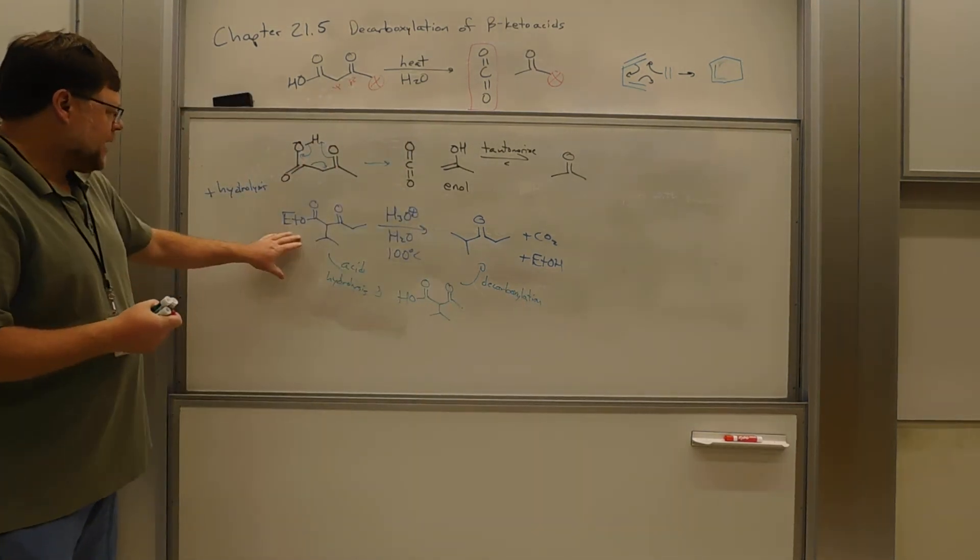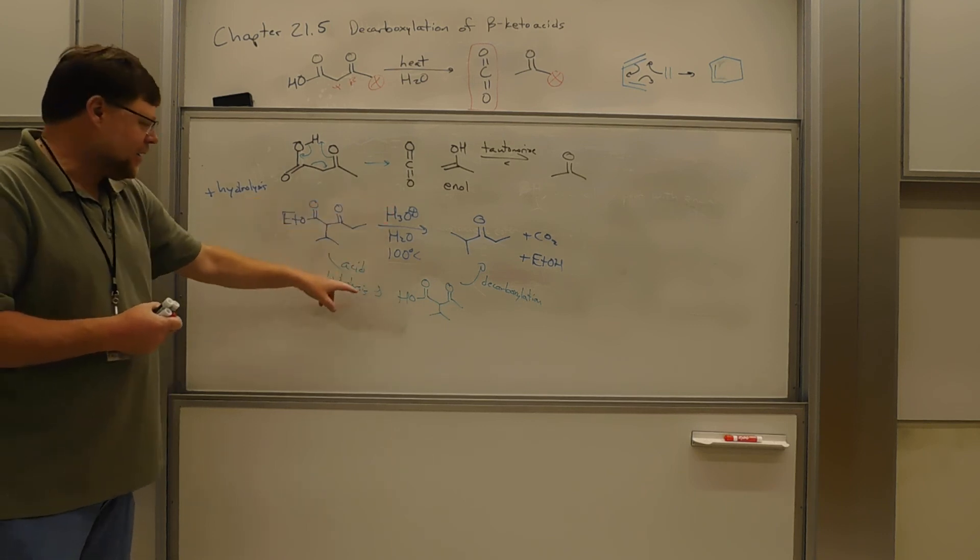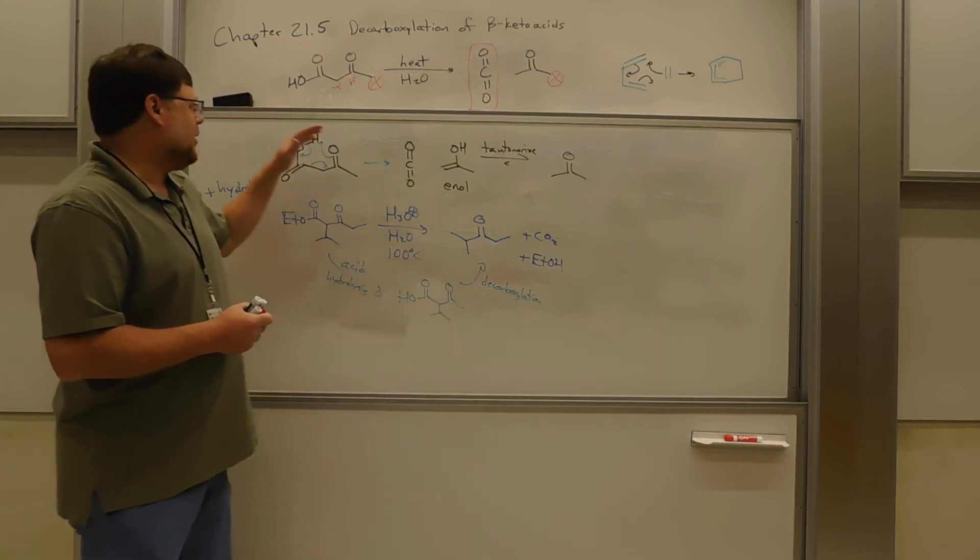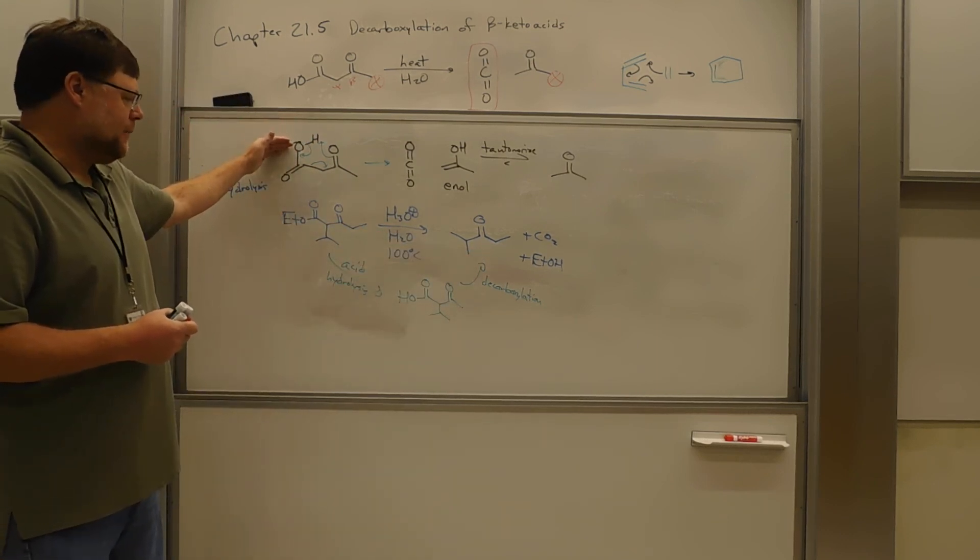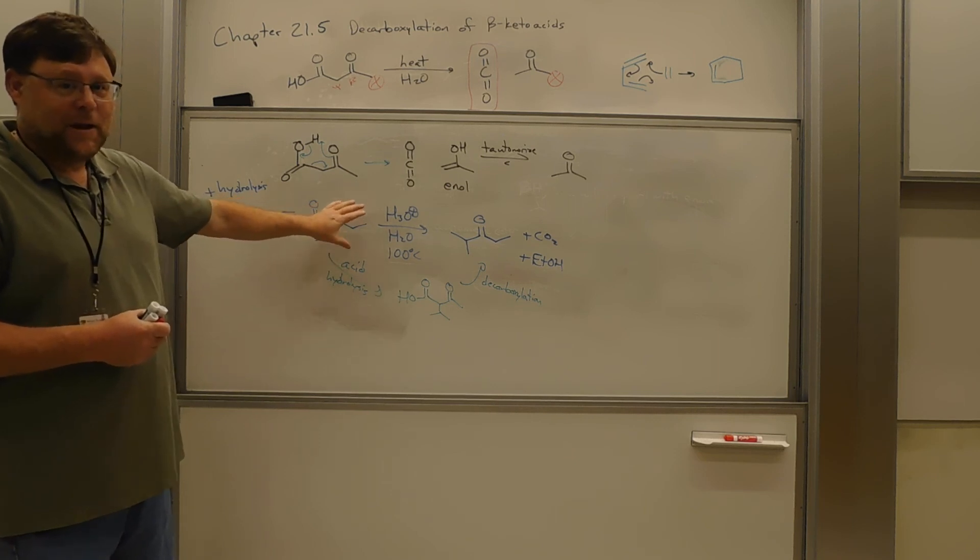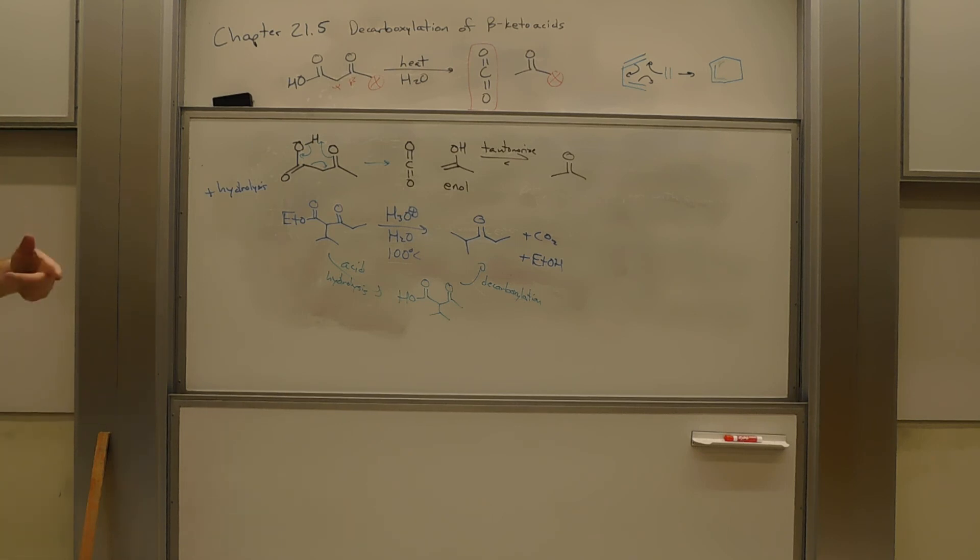So we take a beta-keto ester, acid hydrolysis under aqueous acid conditions. We get, now we get a beta-keto acid. And the beta-keto acid decarboxylates according to this mechanism up here. This is what I've outlined here is essentially the malonic acid and acetoacetic ester synthesis. And that'll be the next video.